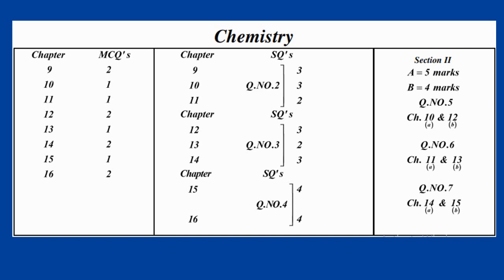Similarly, do not skip Chapter 9 either. Chapter 9 has 2 MCQs and 3 short questions, so it is important. Skipping chapters just to avoid one question type is not a good option — only consider skipping as a last resort if you just need to pass. Use this pairing scheme to decide which chapters to prepare for long questions, short questions, and which things you can manage or skip in the paper.